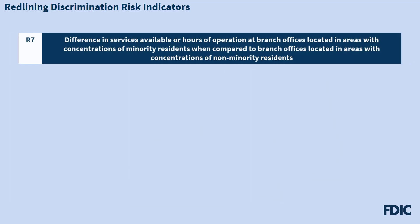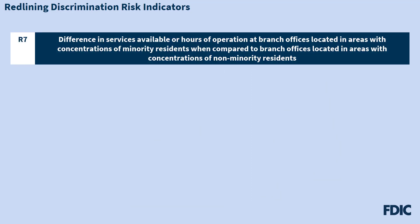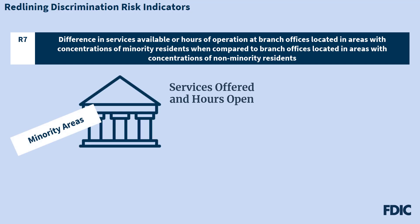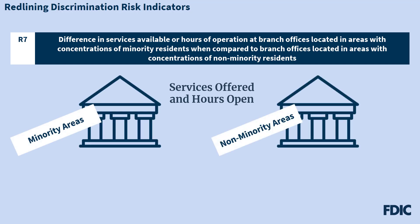Next, R7 risk involves the difference in services available or hours of operation at branch offices located in areas with concentrations of minority residents, when compared to branch offices located in areas with concentrations of non-minority residents. The question here is whether the bank offers different services or has different available hours in minority areas as compared to non-minority areas.